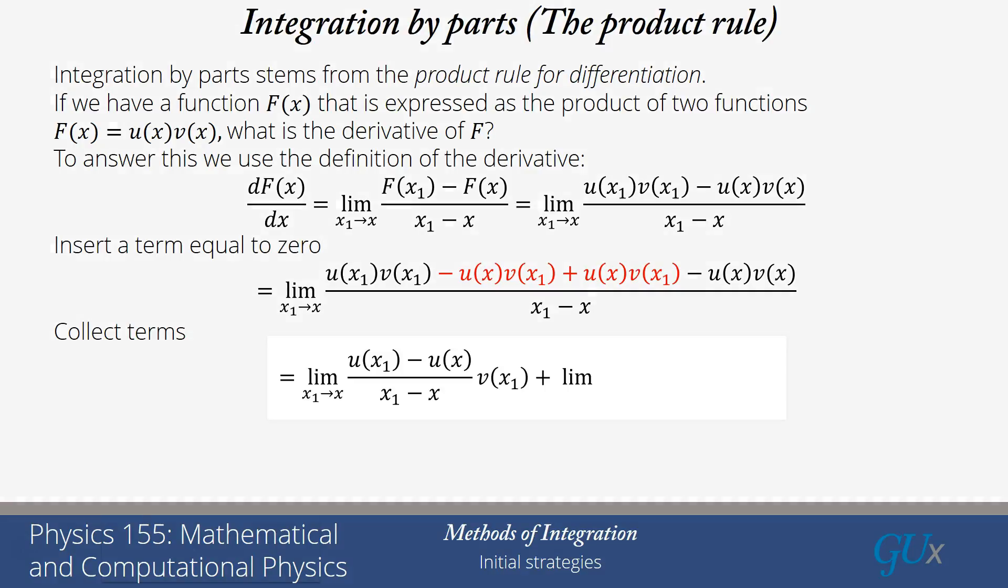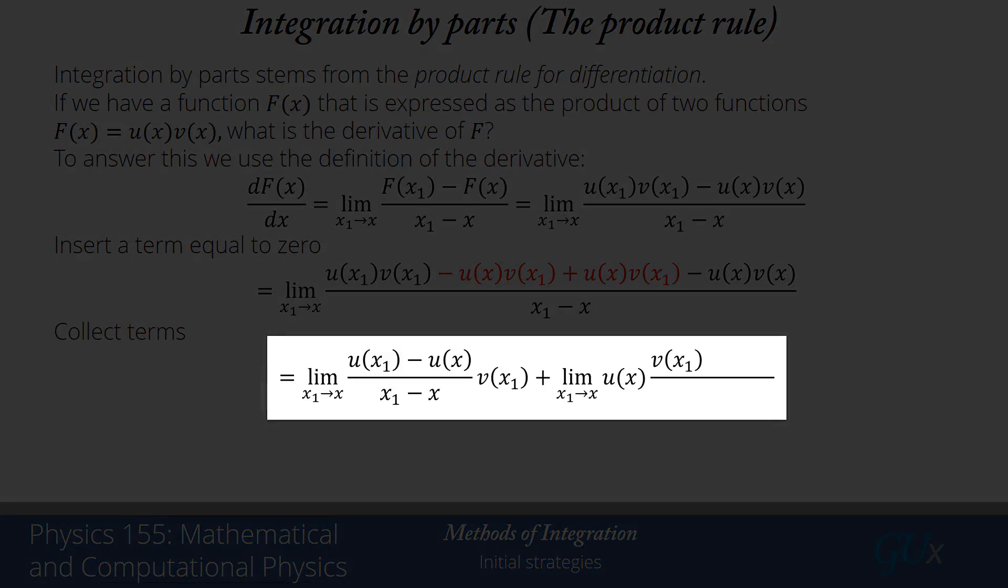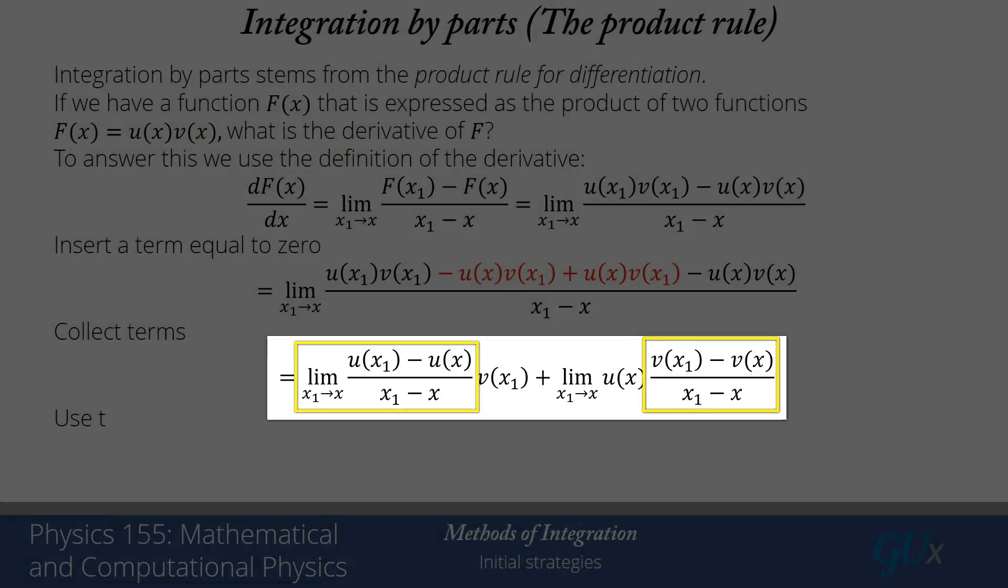So the first two terms become the limit as x₁ approaches x, [u(x₁) - u(x)]/(x₁ - x) times v(x₁), plus the limit as x₁ approaches x of u(x) times [v(x₁) - v(x)]/(x₁ - x). And you should recognize that we now have the derivative of u and the derivative of v appearing in both of these forms.